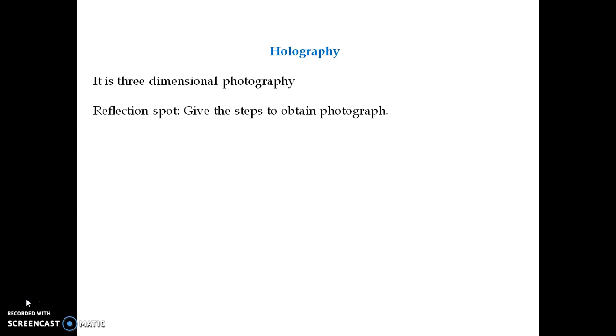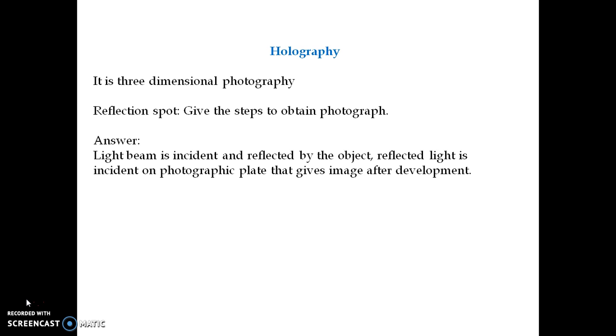I hope you have written your answer. Now the answer to this question is: whenever the light beam is incident on the object, it is reflected by the object and that reflected light contains all the information about the object. That reflected light is made incident on photographic plate that gives amplitude distribution.